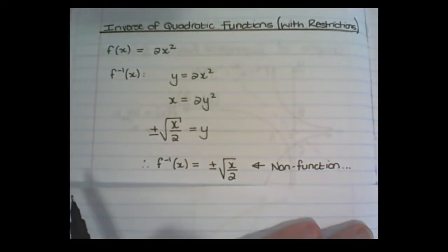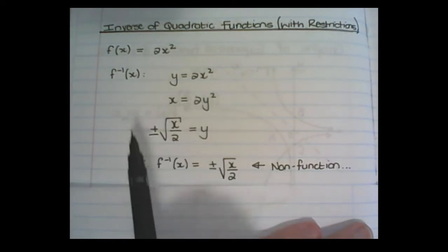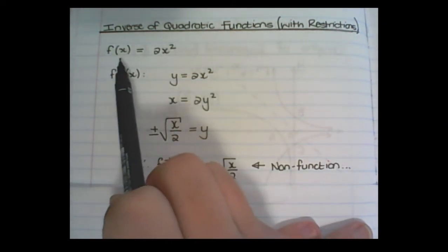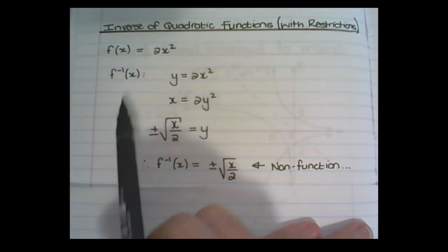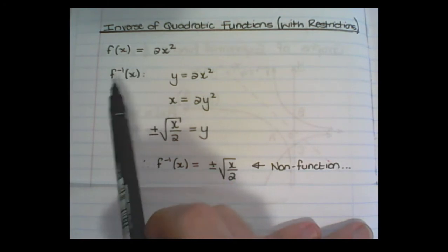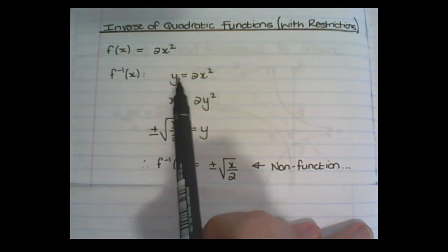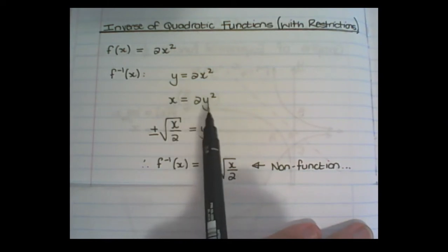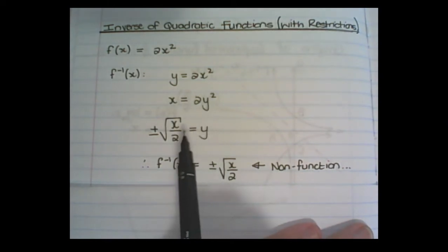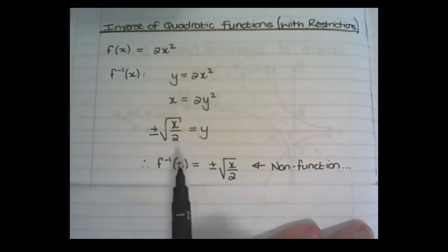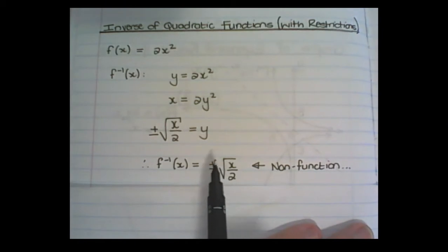In previous videos we have already discussed how to find the inverse function. Let's say we have f(x) equals 2x squared. To find the inverse function, we use four steps: we replace f(x) with y, we swap x and y's position, then we solve y in terms of x. Therefore the inverse function of 2x squared is equal to plus or minus the square root of x over 2.